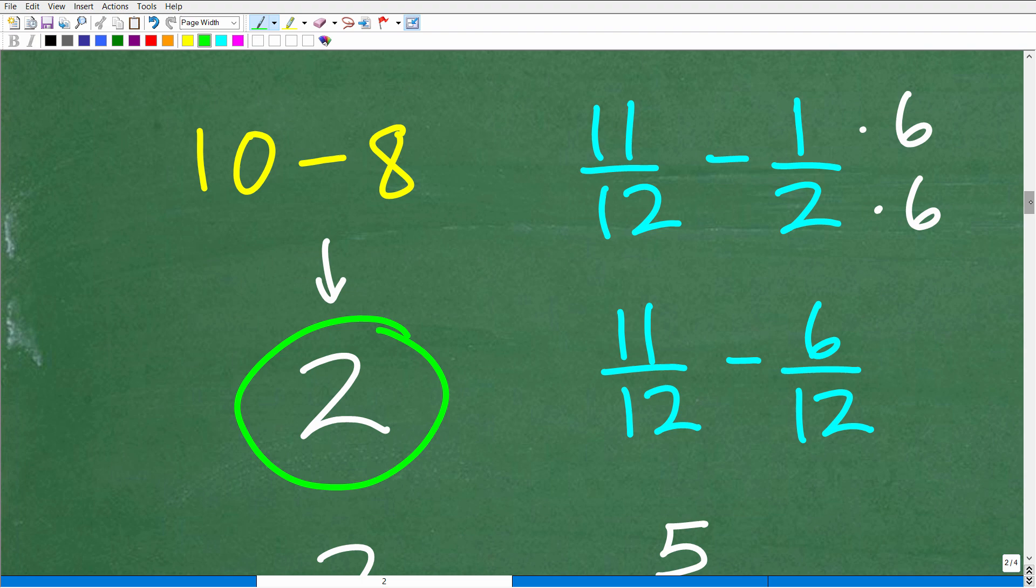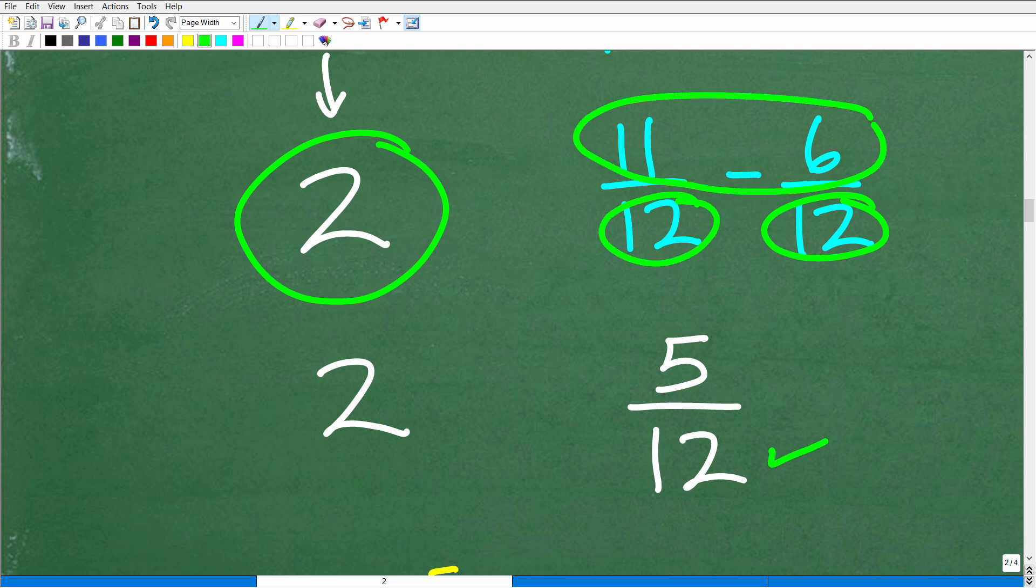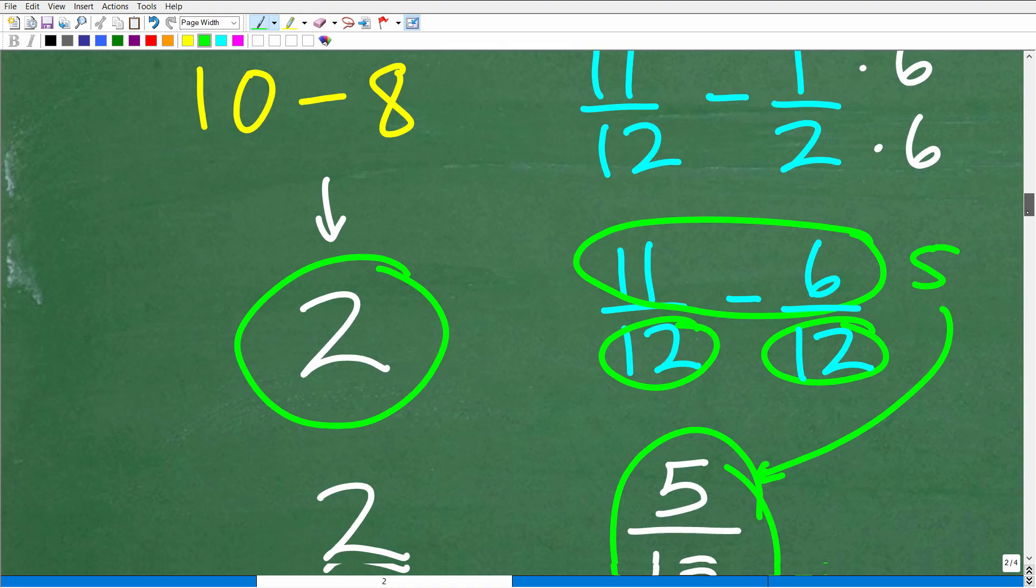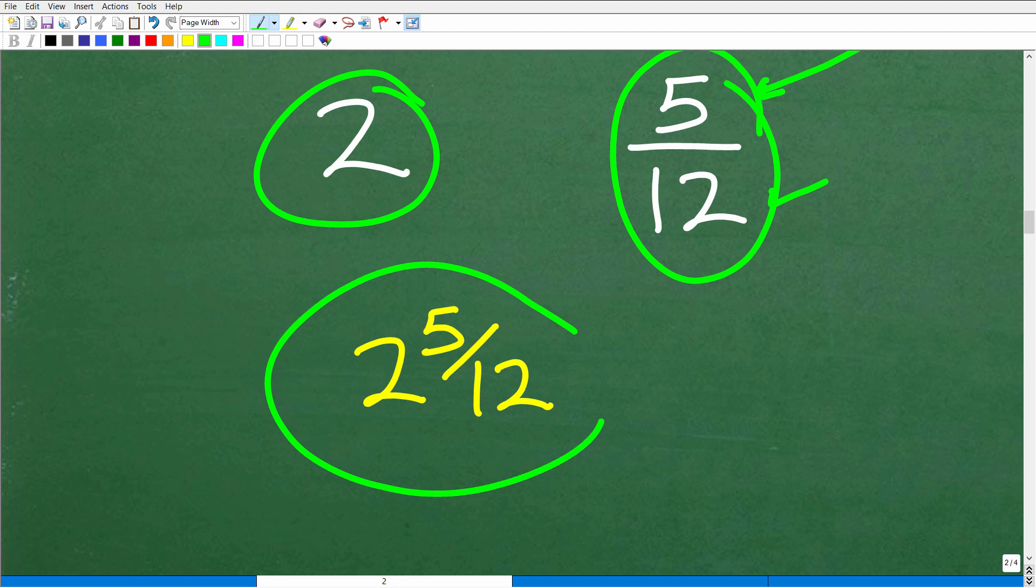And of course 6 twelfths is the same thing as 1 half. And now we can simply subtract the numerators. So we're talking about basic subtraction of fractions. So we keep that same denominator 12 and we subtract the numerators. 11 minus 6 is 5. So this will be our answer here. So this part is 5 twelfths. And we already answered what 10 minus 8 is, that's 2. So this is 2 and 5 twelfths. Or we could write it just like this: 2 and 5 twelfths.